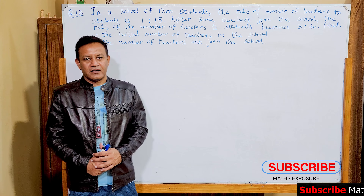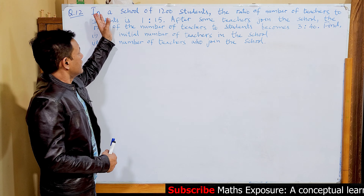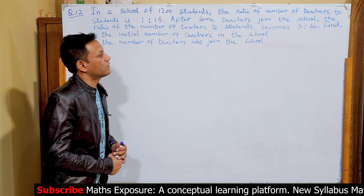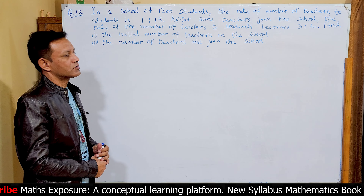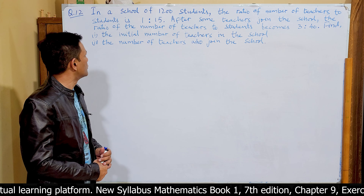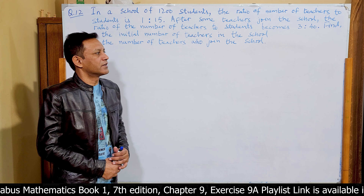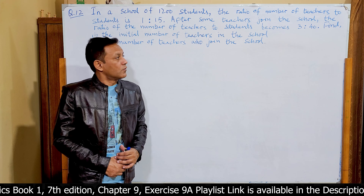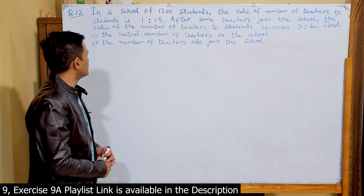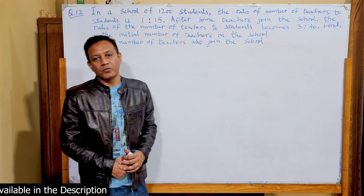Hello viewers, you are watching my channel Maths Exposure. Today we have a question: in a school of 1200 students, the ratio of number of teachers to students is 1:15. After some teachers join the school, the ratio becomes 3:40. Find number one — the initial number of teachers in the school, and number two — the number of teachers who join the school.